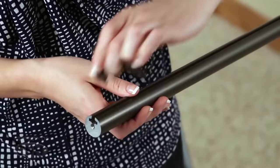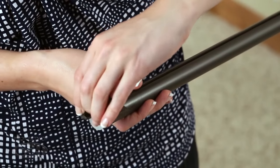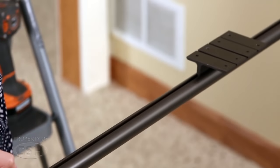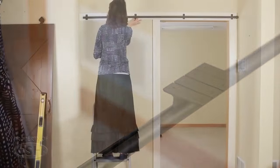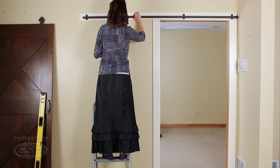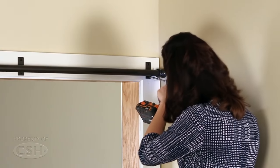Slide the brackets onto the rail. Lift the rail into place, align the top of the brackets to the desired mark, and pre-drill holes for the bracket fasteners.